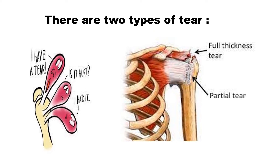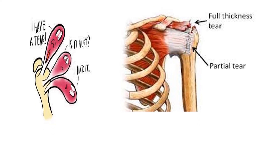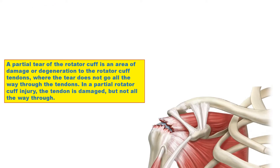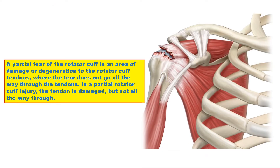There are two types of tear: full thickness tear and partial thickness tear. A partial tear of the rotator cuff is an area of damage or degeneration to the rotator cuff tendons, where the tear does not go all the way through the tendons. In a partial rotator cuff injury, the tendon is damaged but not all the way through.